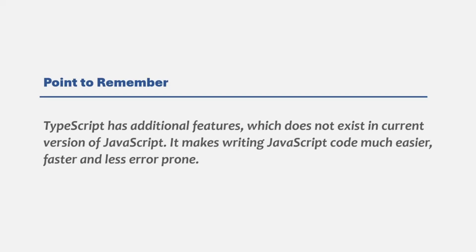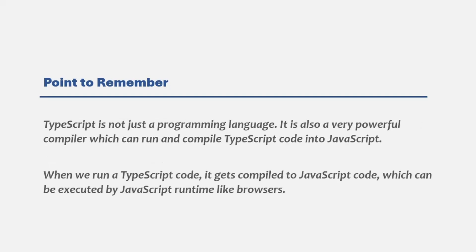How can we execute TypeScript code? TypeScript is not just a programming language — it is also a tool. It is a very powerful compiler which can run and compile TypeScript code into JavaScript. When you run TypeScript code, it gives you JavaScript code in return, and that JavaScript code can be executed by the JavaScript runtime like browser and Node.js. So using TypeScript, we write TypeScript code utilizing all its new features, and at the end we get JavaScript code which can be executed by the browser or other JavaScript runtimes. We do not write JavaScript directly; instead, we write TypeScript and compile it into JavaScript.